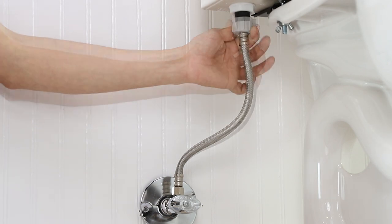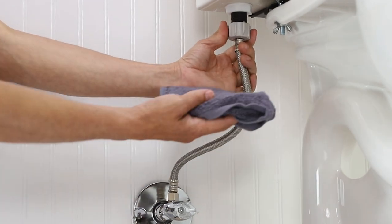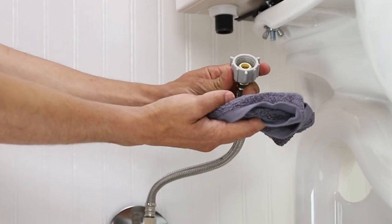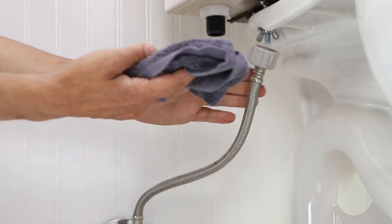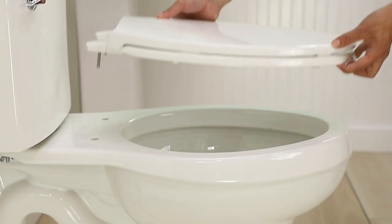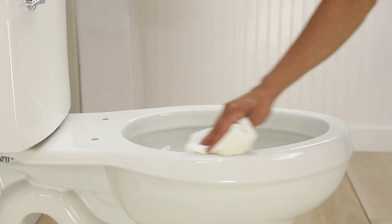Unscrew the flexible water supply line from your fill valve under the toilet tank. You may want a small bucket or towel handy to catch any residual water. Remove your existing toilet seat and thoroughly clean your toilet.